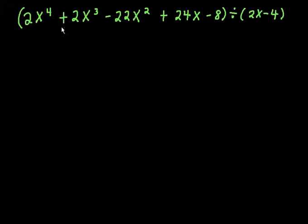Let's get started. Here's the problem. We've got five terms here. 2x to the power of 4 plus 2x cubed minus 22x squared plus 24x minus 8 divided by the quantity 2x minus 4. So we're not going to use long division or synthetic division for this one. We're going to use the area model, which works really well, especially if there's not a remainder.